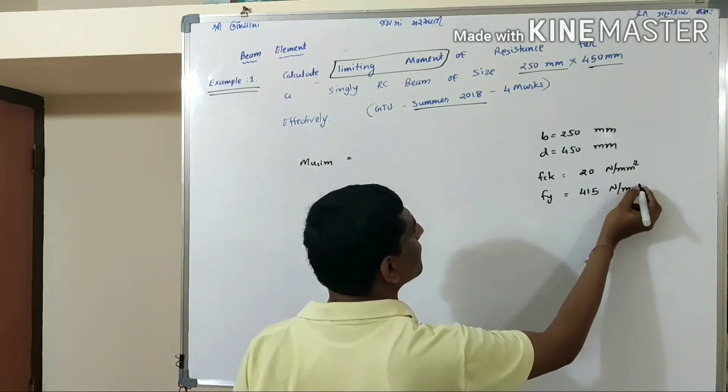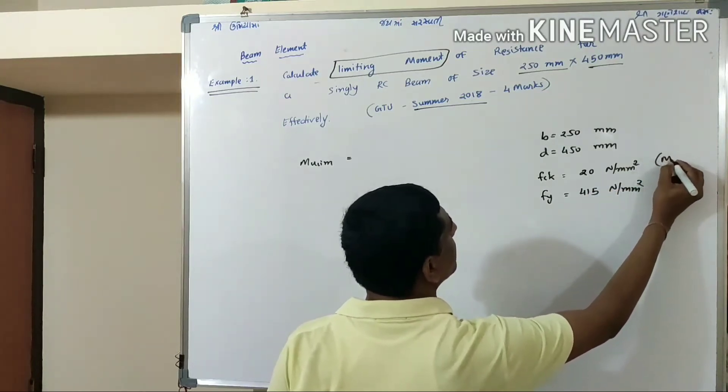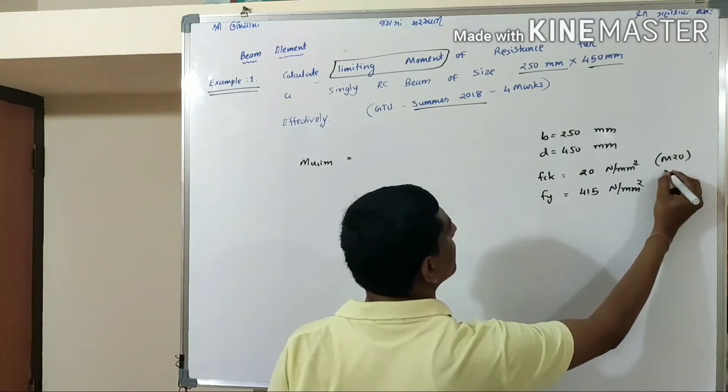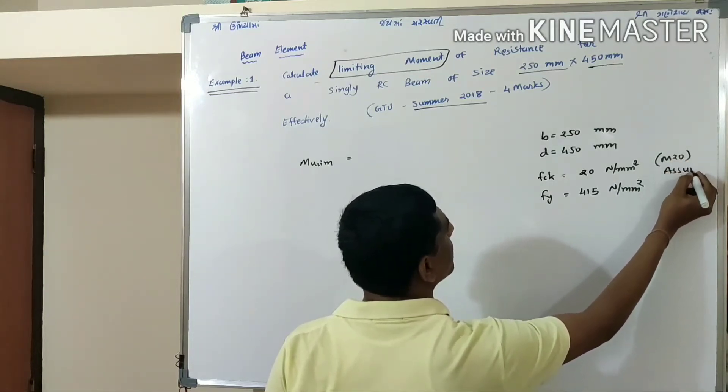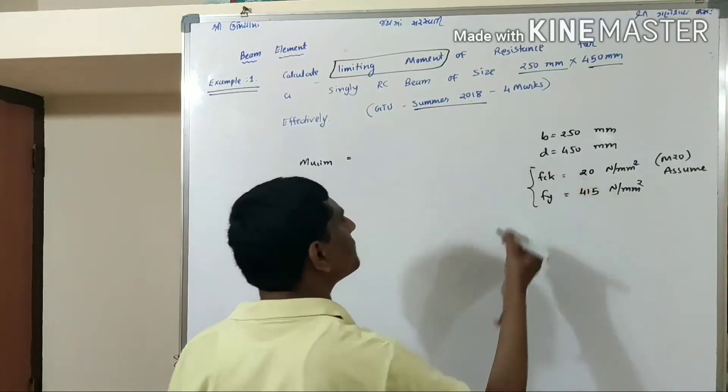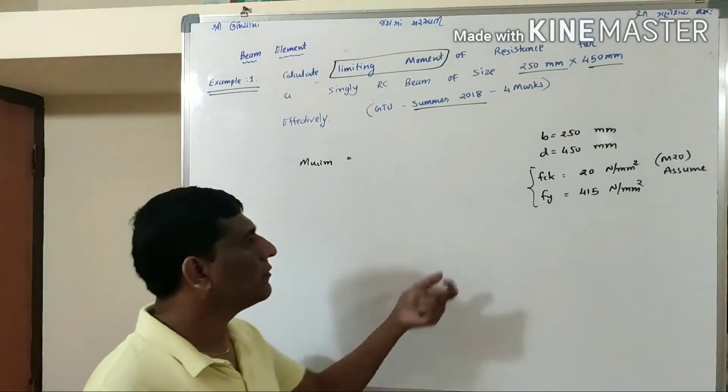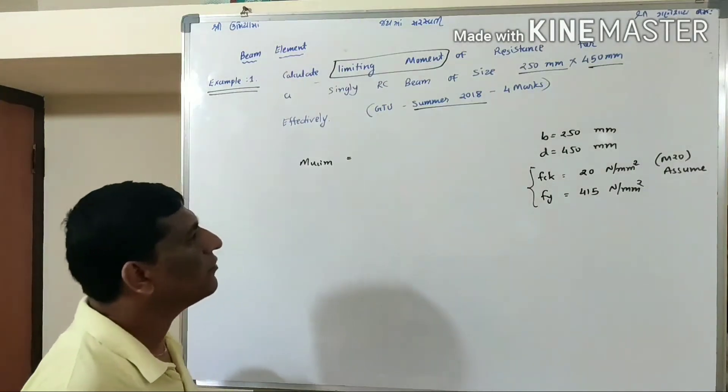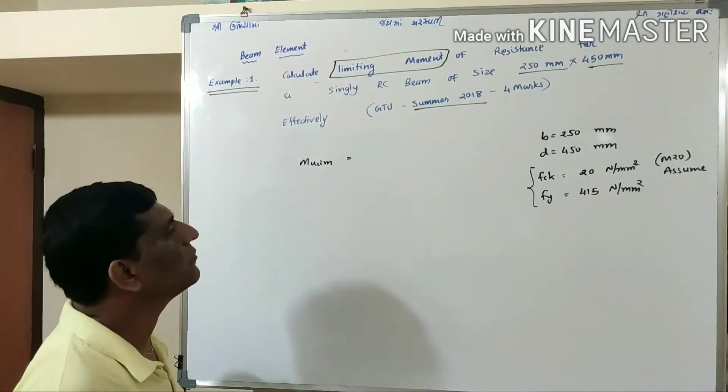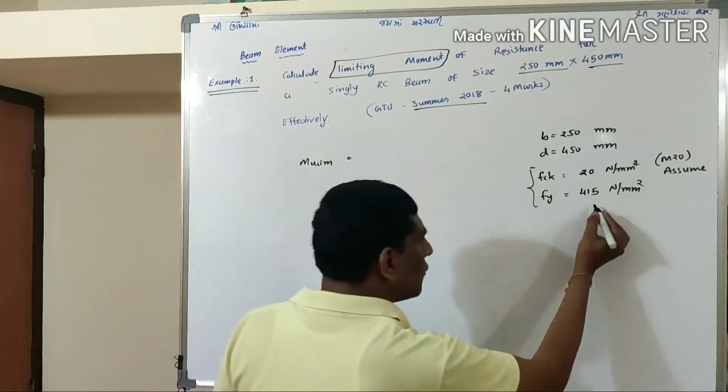Singly RC beam with B and D is given: B is 250 mm, D is 450 mm. FCK and FY is not given, so let's assume M20 and FE 415. For 415 grade, we know the equation.